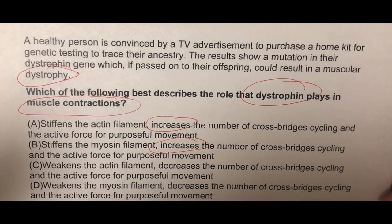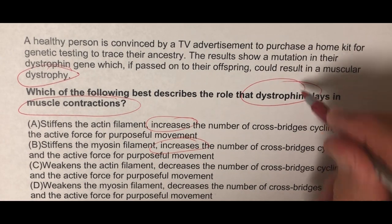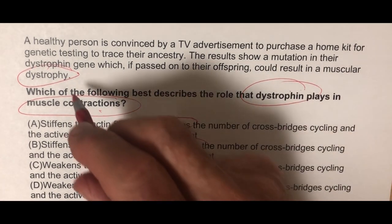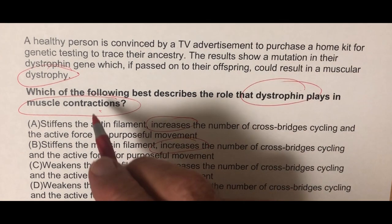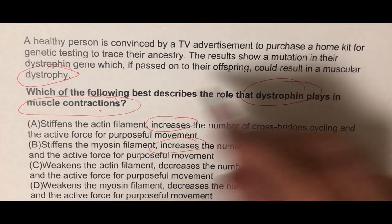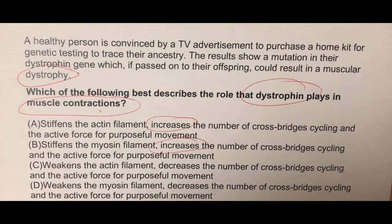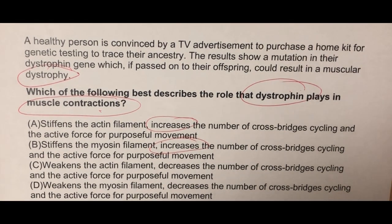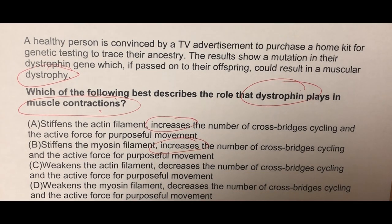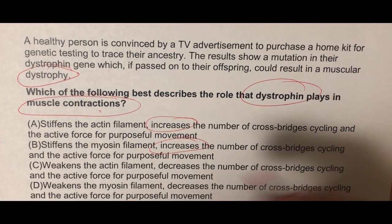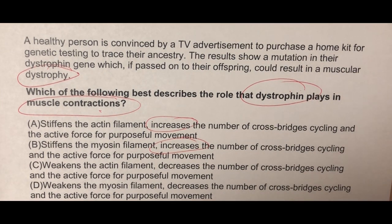We're looking for the normal function of dystrophin, not what happens when dystrophin is deficient or mutated to produce muscle weakness in muscular dystrophy. So we can clearly eliminate choices C and D, because weakening the actin filament, weakening the myosin filament, decreasing the number of crossbridges, and decreasing the active force for purposeful movement would occur if a person had muscular dystrophy without dystrophin — but certainly not the normal function of dystrophin.